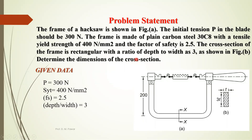Given data: P is 300 Newton, SYT is 400 Newton per mm square, factor of safety is 2.5, and depth to width ratio is 3. The distance of the force from the frame's neutral axis or cross section is 200 mm. That is why this is eccentric loading — the load is acting at a distance of 200 mm from the neutral axis.